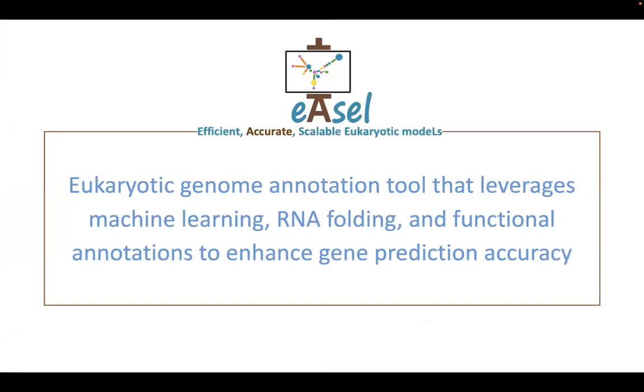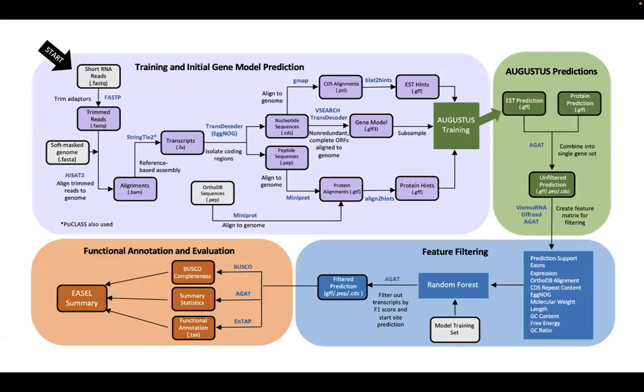Here, we present EASL, a eukaryotic genome annotation tool that leverages machine learning, RNA folding, and functional annotations to enhance gene prediction accuracy. EASL is wrapped in Nextflow for user ease and faster run times.